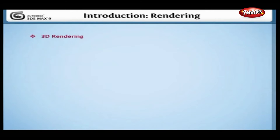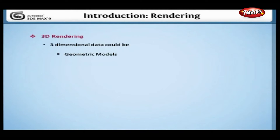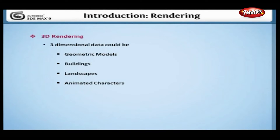The three-dimensional data that is depicted could be a complete scene including geometric models of different three-dimensional objects, buildings, landscapes, and animated characters. Artists need to create this scene by modeling and animating before the rendering can be done.